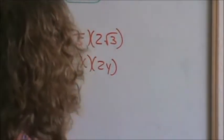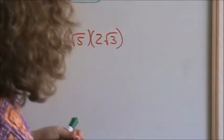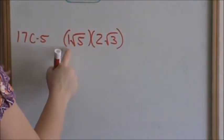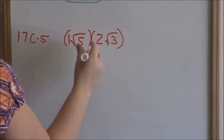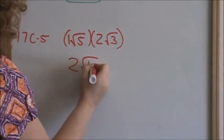So this is not anything different than saying 1 square root of 5 times 2 square root of 3. Numbers to numbers and radicals to radicals. 1 times 2, 2. Square root of 5 times square root of 3, square root of 15. So this is 2 square root of 15.